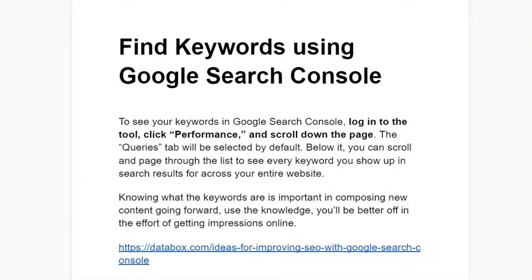It's an easy thing to do if you get Google Search Console set up. Assuming you've got a Google Account set up, you log into the tool, you click on Performance, you scroll down the page a little bit, and you're going to see the Queries tab, which shows you what the search query is that people are using to find your page.